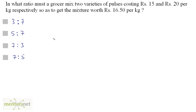In what ratio must a grocer mix two varieties of pulses costing Rs.15 and Rs.20 per kg respectively so as to get the mixture worth Rs.16.50 per kg? There are two varieties of pulses — one is the cheaper variety, another is the costlier variety. We have been given the prices of both.